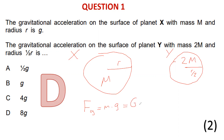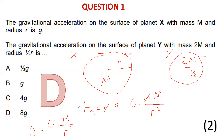The second formula is G times capital M (mass of planet) times small m (mass of object) over r squared. If you equate both expressions for gravitational force, the mass of the object cancels, and you get: gravitational acceleration g equals G times mass of planet over r squared.